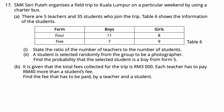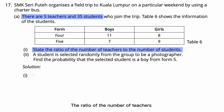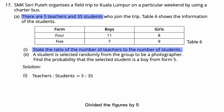Question 17. SMK Sripute organizes a field trip to Kuala Lumpur using a charter bus. Question 17A1: Find the ratio of the number of teachers to the number of students. There are 5 teachers and 35 students altogether. The ratio is 5 to 35, which simplifies to 1 to 7.